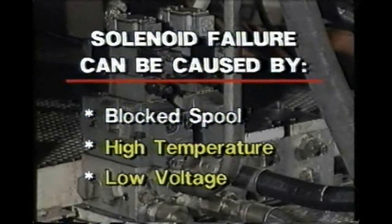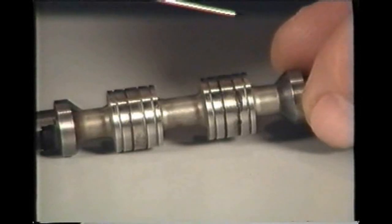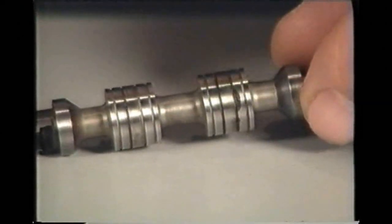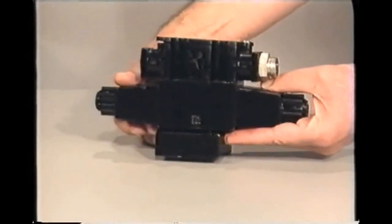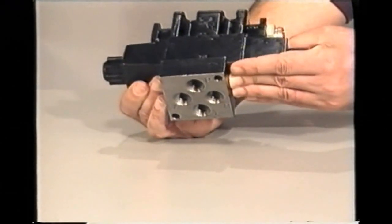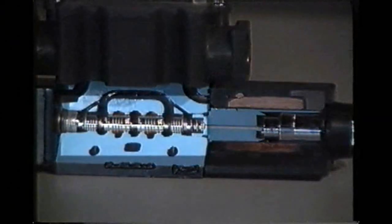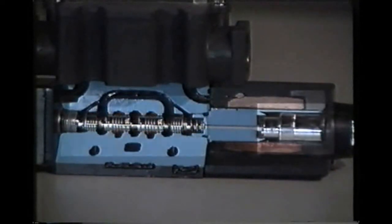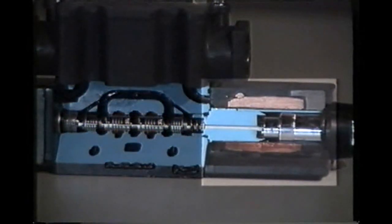Blockage usually occurs when the spool cannot move freely. Often this is due to some kind of contamination, silt in the valve or varnish on the spool for example. Sometimes spools will stick because the valves are improperly mounted on slightly warped or damaged subplates. If the spool does not move freely, the plunger in the solenoid will be unable to seat properly. The high inrush current will not drop to the lower holding level and the solenoid will eventually burn out.